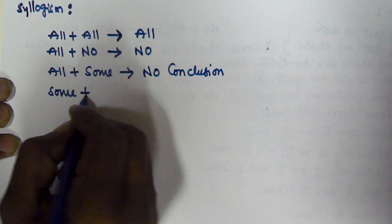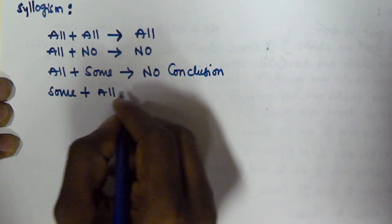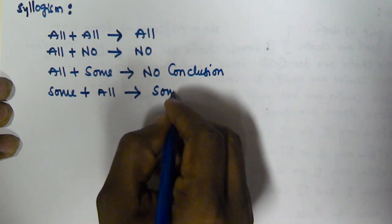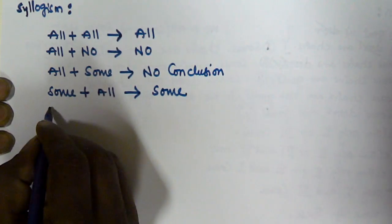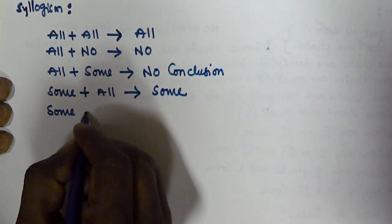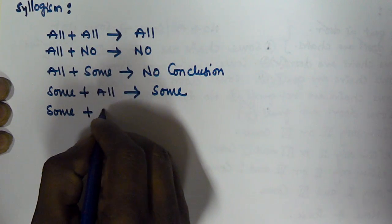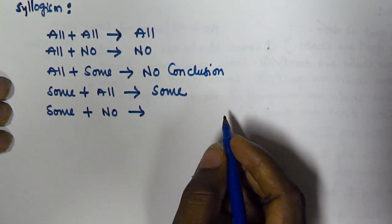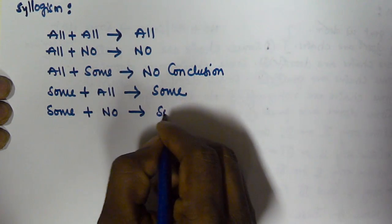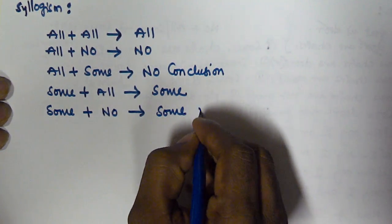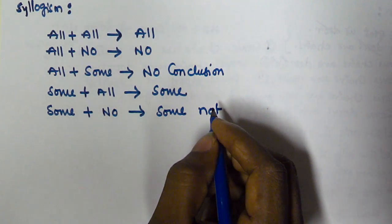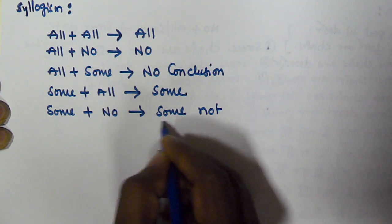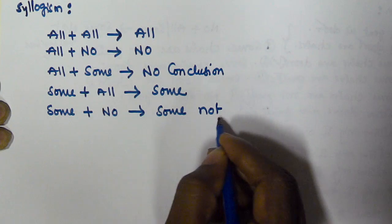If the first starts with 'some' and the second starts with 'all', then the conclusion is going to start with 'some'. If the first starts with 'some' and the second starts with 'no', then the derived conclusion is going to contain 'some not' — that is, it will start with 'some' and contain 'not' in between.